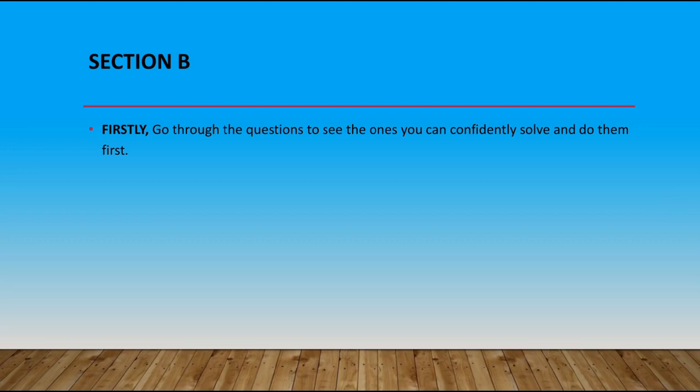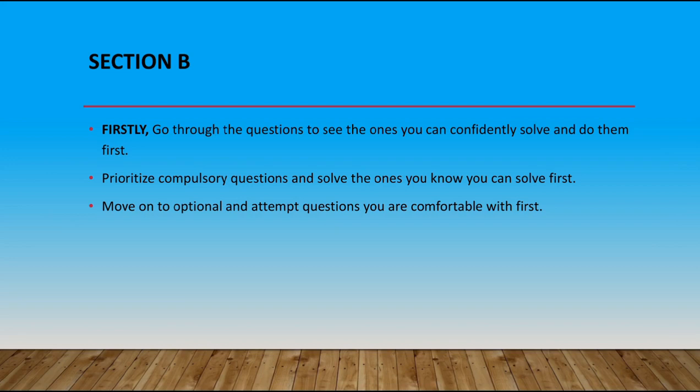So, what about section B? Firstly, go through the questions to see the ones which you can confidently solve and then do them first. Prioritize compulsory questions and solve the ones you know you can solve first. A priority should be on the compulsory ones because that side, you need to get the marks from that side and even with the compulsory ones, look through to solve the ones you can solve first as you did in the objectives. Move on to the optional and attend questions that you are comfortable with first as well because no examiner is thinking about how you have the ability to solve difficult questions. We just want you to be able to solve the ones you can solve.